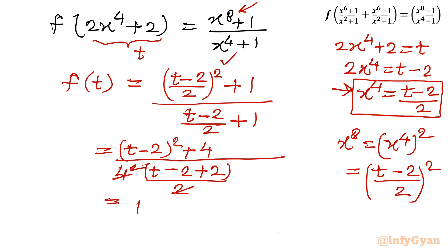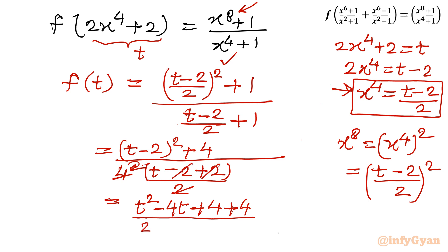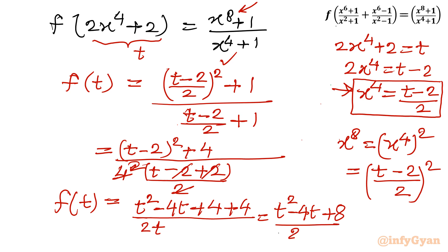Expanding (t-2)²: t²-4t+4. Adding 4 gives t²-4t+8. The denominator after cancellation is 2t. So f(t) = (t²-4t+8)/(2t), where t cannot be 0.